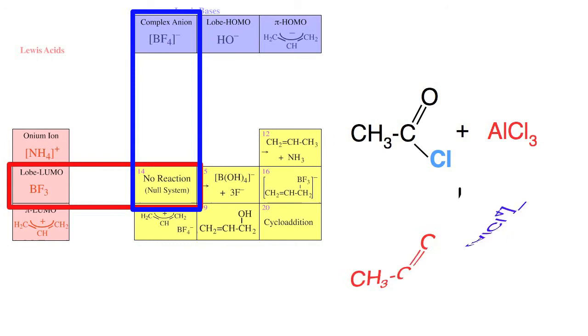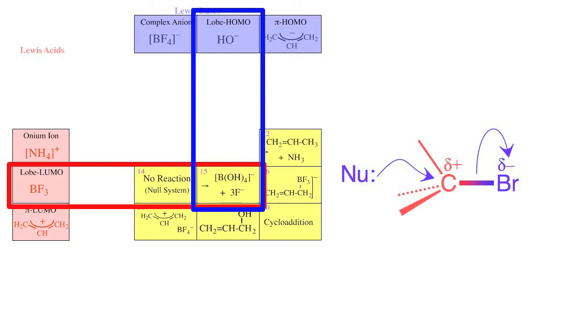Lobe HOMO Lewis bases with lobe LUMO Lewis acids. This is the area of SN1 and SN2 reaction mechanisms where the lobe HOMO Lewis base acts as the nucleophile and displaces a nucleofuge from a delta positive carbon center.